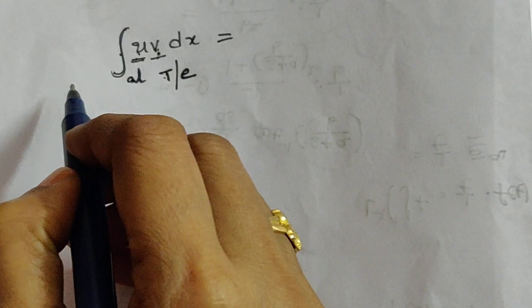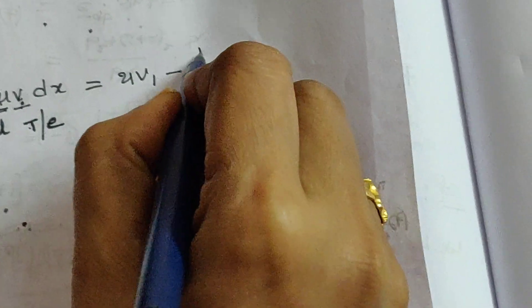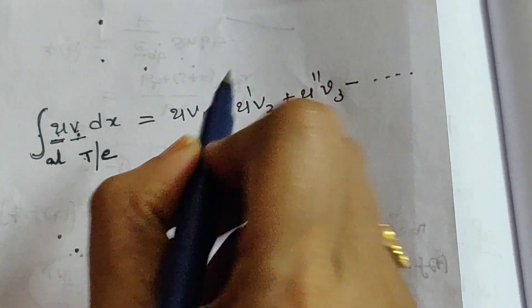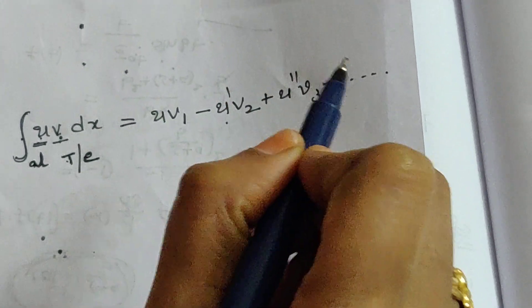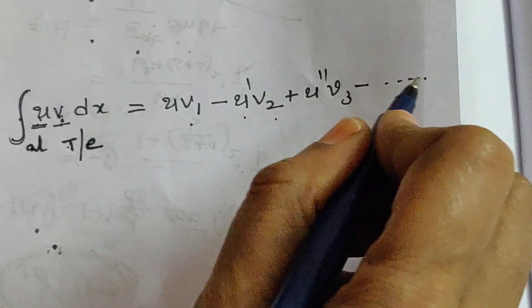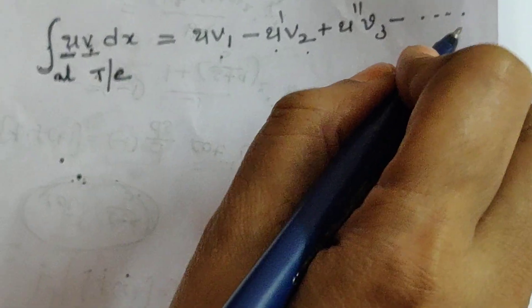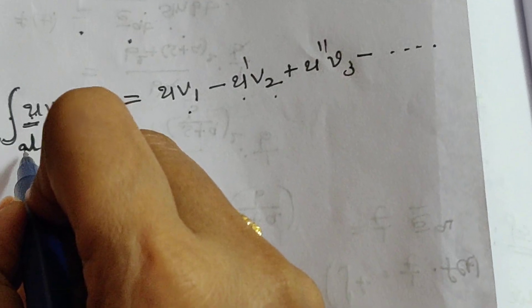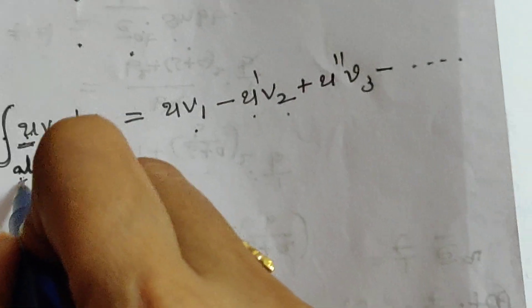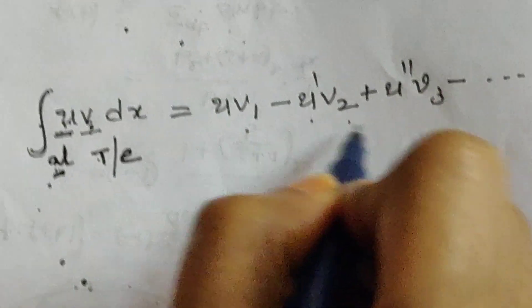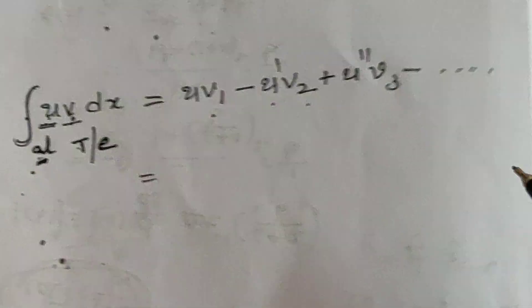The generalized rule of biparts formula is: integral uv dx equals uv1 minus u dash v2 plus u double dash v3 minus and so on, where u dash, u double dash, and so on are successive derivatives, and v1, v2, v3 are successive integrations of v. Since u is algebraic, after a finite number of differentiations it becomes zero, so the infinite formula stops.